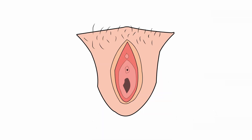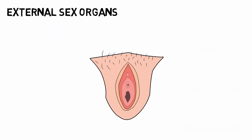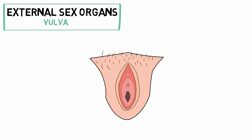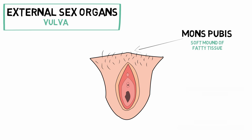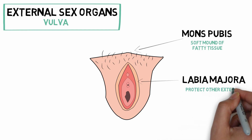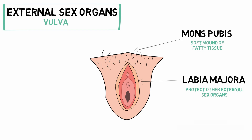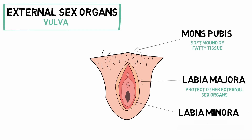The external sex organs are also known as the vulva. They consist of the mons pubis, which is a soft mound of fatty tissue in front of the pubic bone — 'mons' means mound and 'pubis' refers to the pubic bone. The labia majora are the outer folds of skin that protect the other external reproductive organs; they also contain sweat and oil glands.